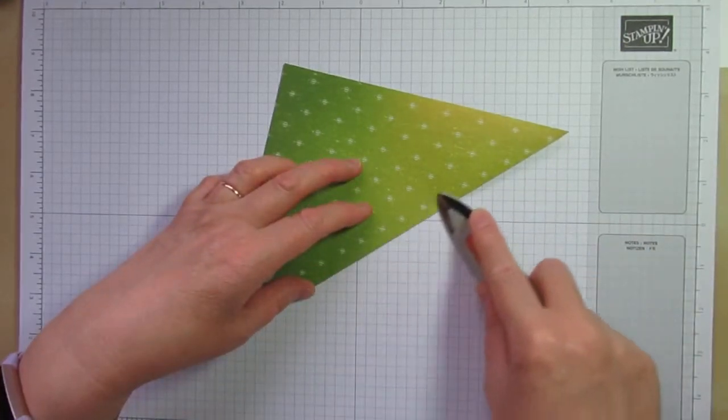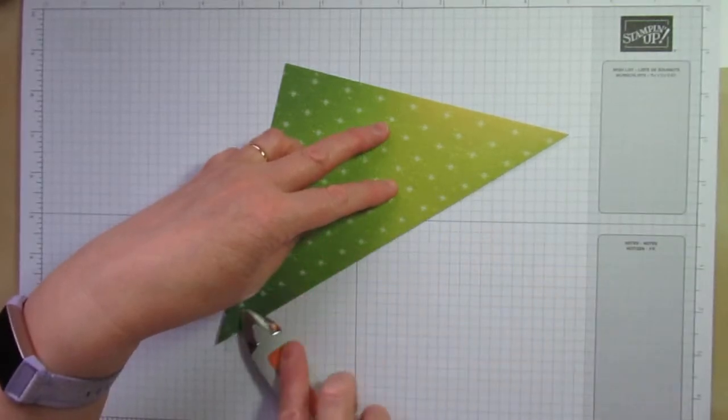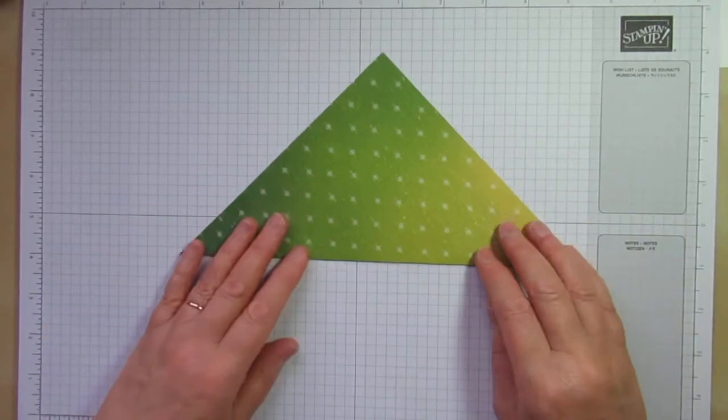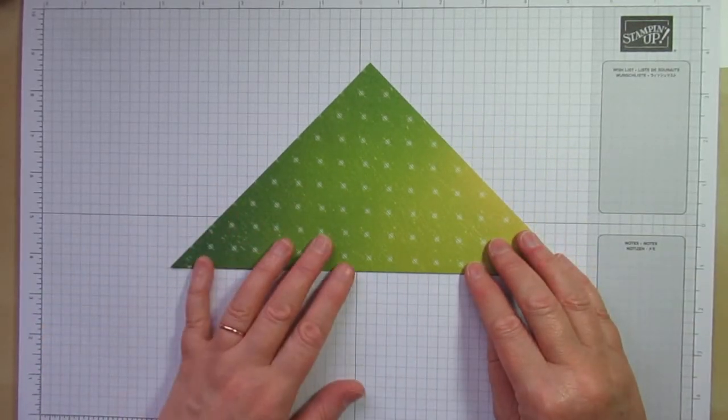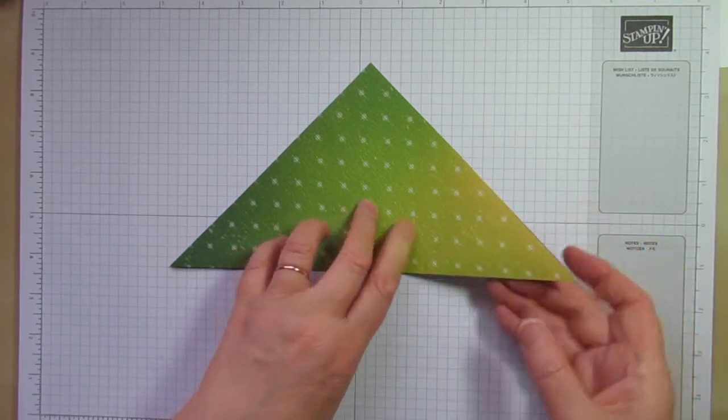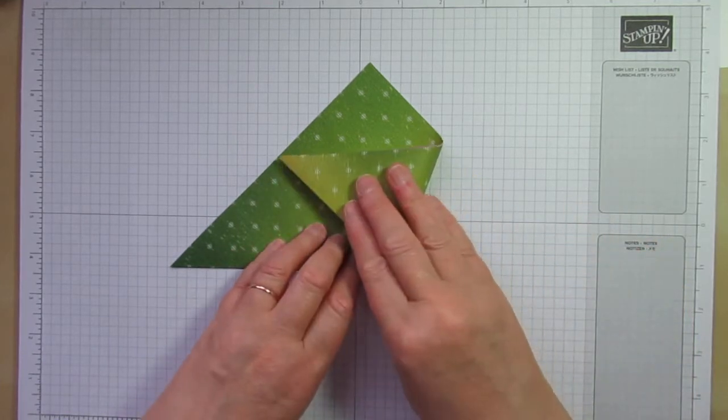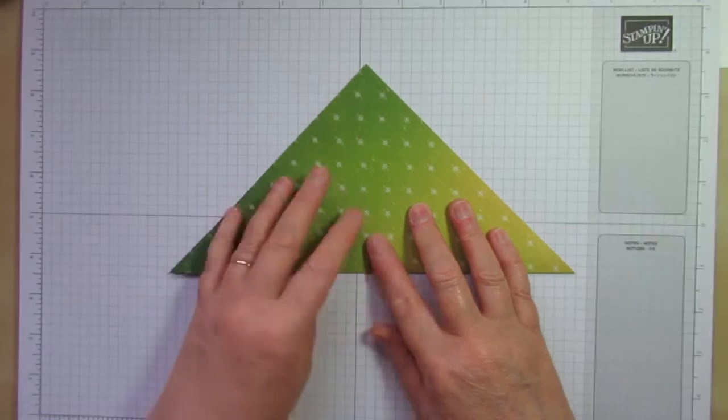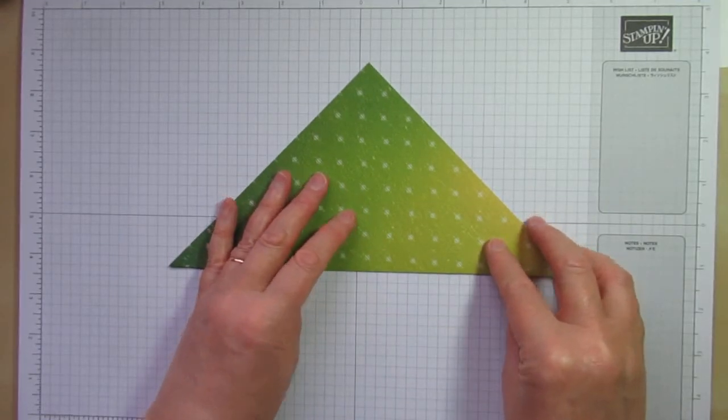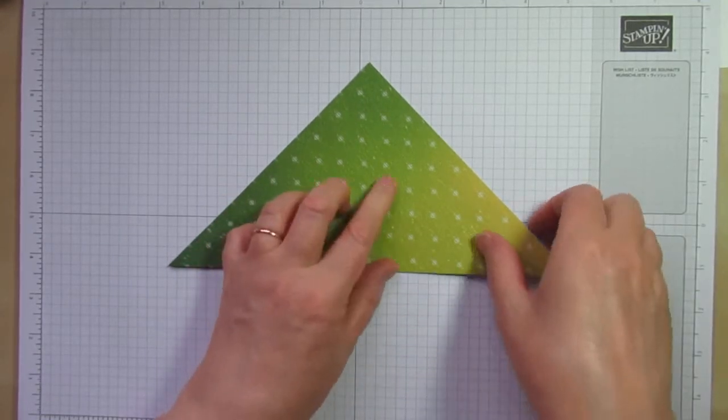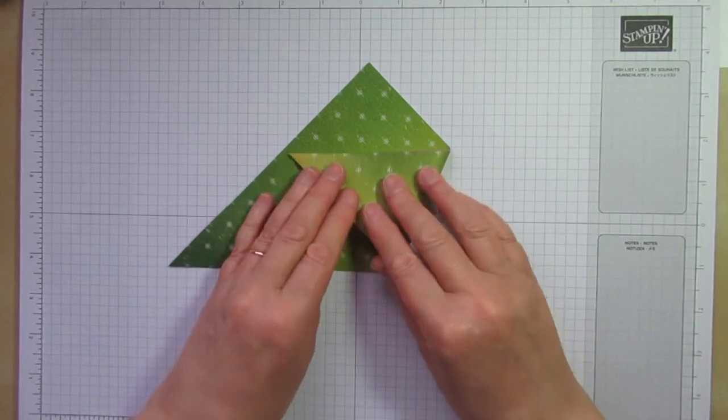So give that a burnish like so and then I'm just going to line this up on my grid paper just now until I can bring this corner over to here or this corner. It doesn't matter which you fold over first. I just want to keep this straight so again grid paper is a godsend.